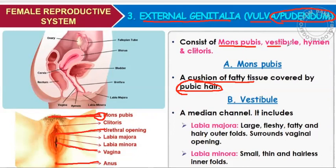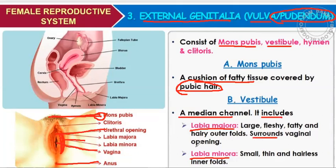Then is the vestibule — a median channel. The vestibule consists of the labia majora and labia minora. Labia majora and labia minora are the lips present in the vagina, and they are present for the protection of the vagina from external environmental infections. Labia majora is a fatty, hairy skin fold that surrounds the vaginal opening. Labia minora are thin, hairless inner skin folds.